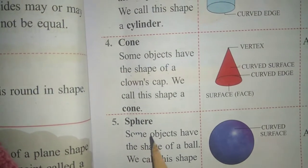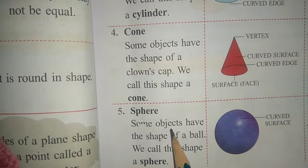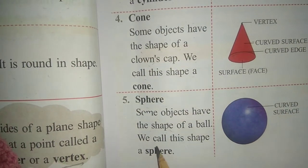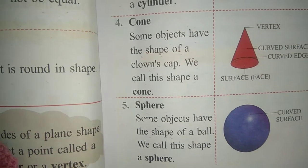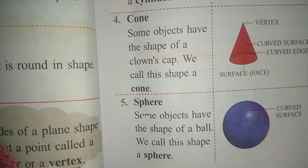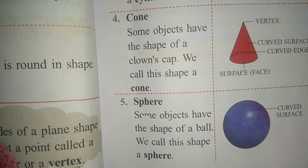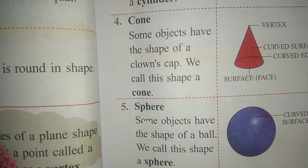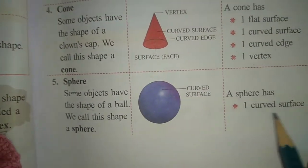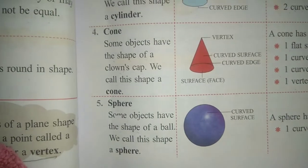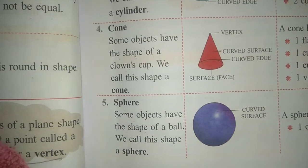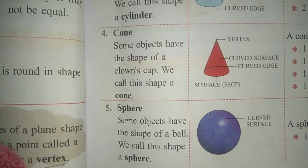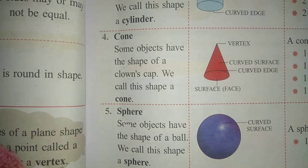The next shape is sphere. Some objects have the shape of a ball. We call this shape a sphere, and it has a curved surface. Now do the worksheet in your notebook. Thank you.